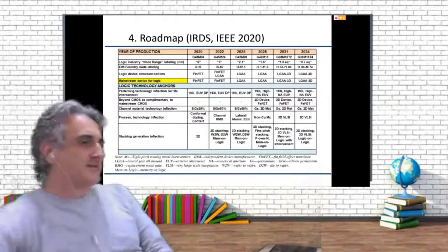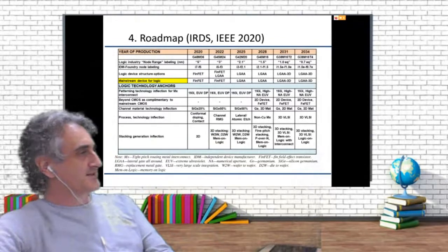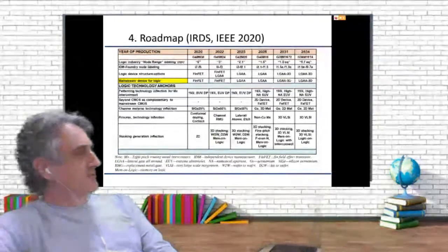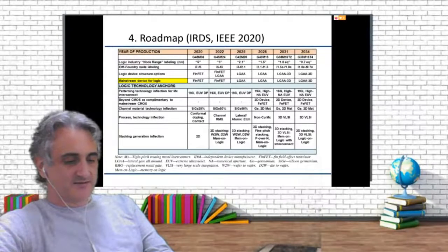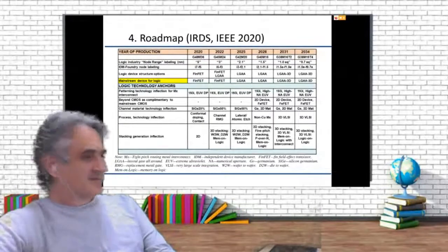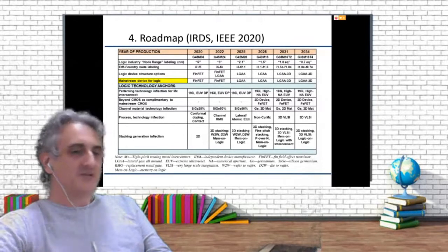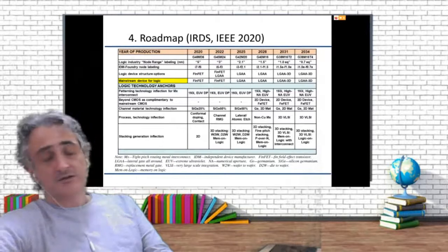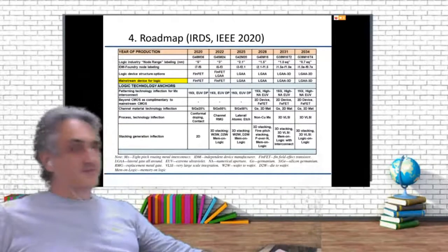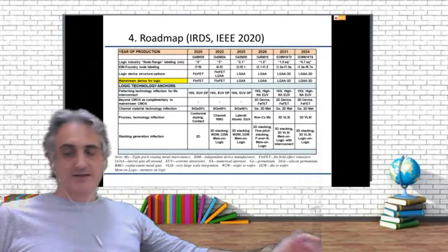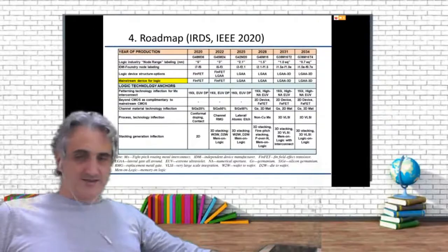Using Moore's law, the whole industry makes forecasts. For instance, this is the International Roadmap for Devices and Systems — people get together and say, let's talk about what the future holds for all of us: what we will try to develop for the next 15 years, so we know how to invest money and what to look for. Many very good people get together and start thinking about what we will do in 10 years.